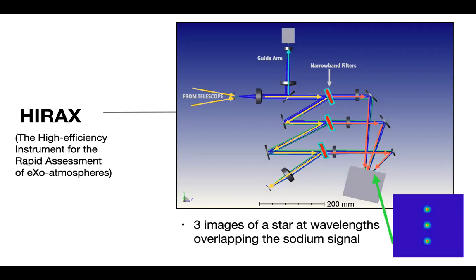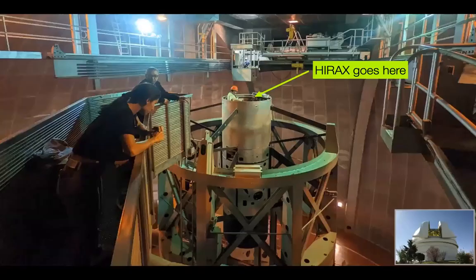So HYRAX stands for the High Efficiency instrument for Rapid Assessment of eXo-atmospheres. So that acronym kind of came from the idea that because we're in imaging mode, we'll be able to achieve the photometric precisions closer to the photon noise and be less impacted by systematics that commonly affect spectrographs. And of course, we're going after exoplanet atmospheres. So the final image that HYRAX produces is shown in this bottom right blue figure here. And this is just a simulation. But the final image is just three stars, copies of three stars that overlap the sodium signal and kind of sample the sodium feature.